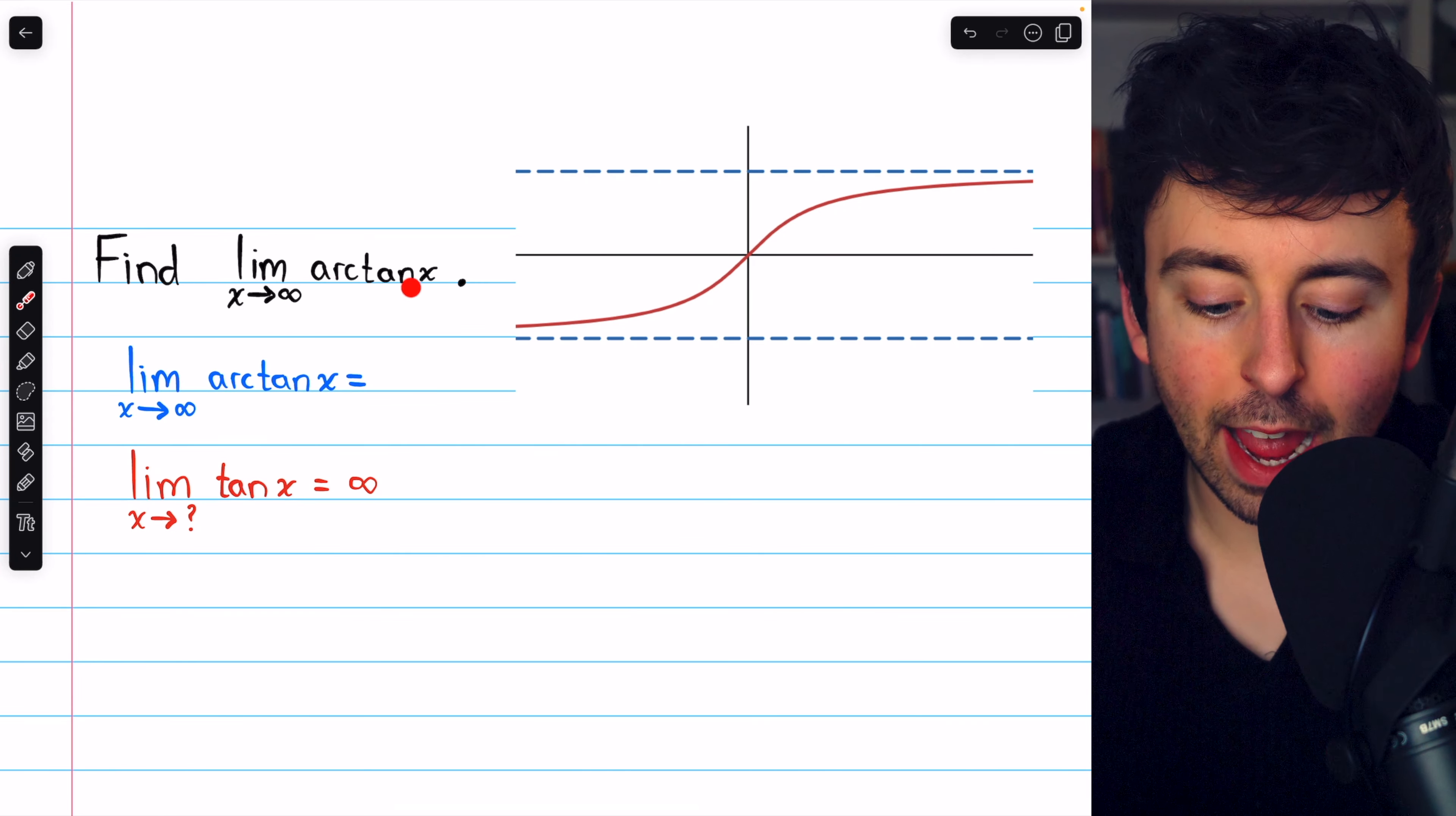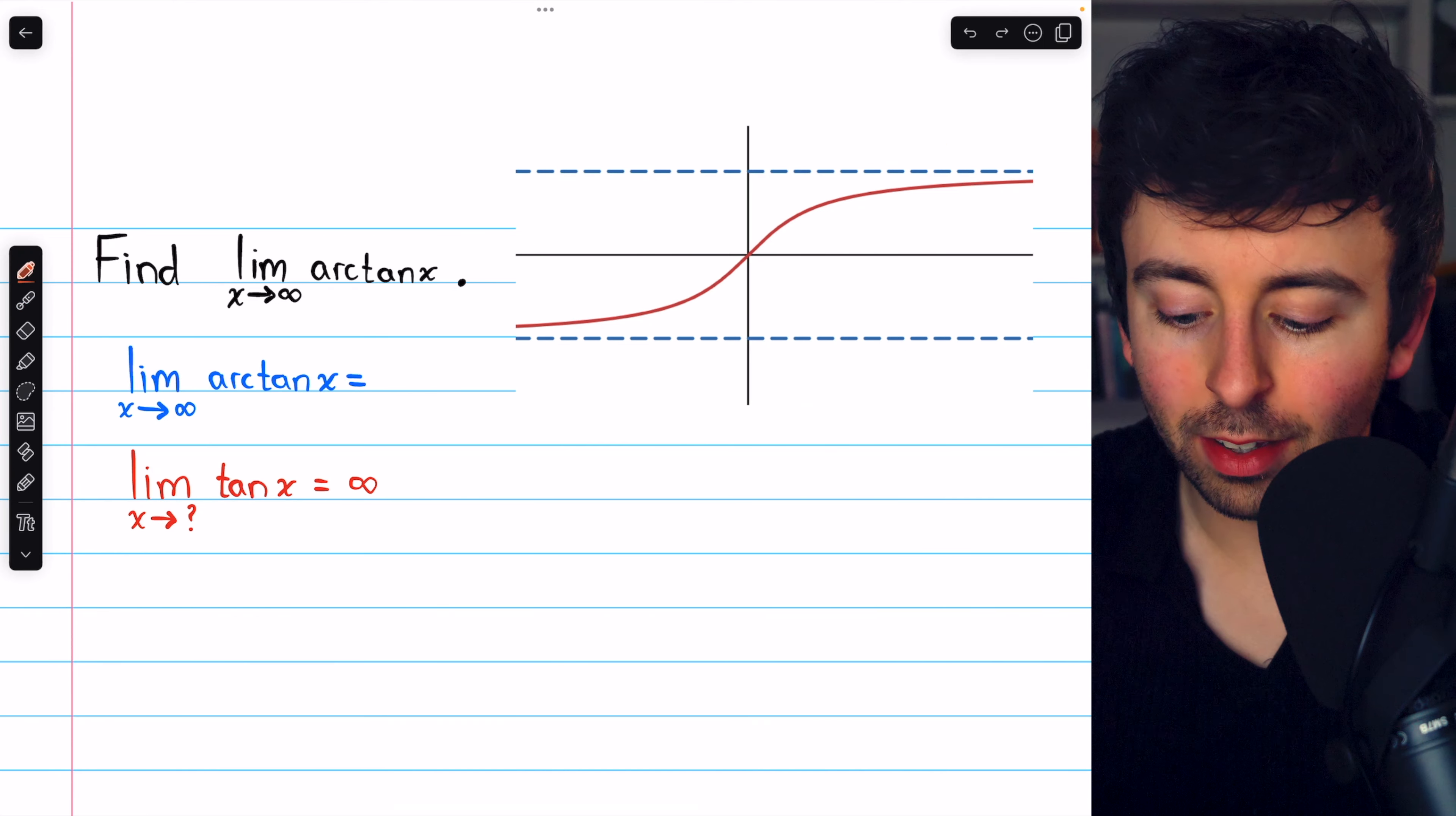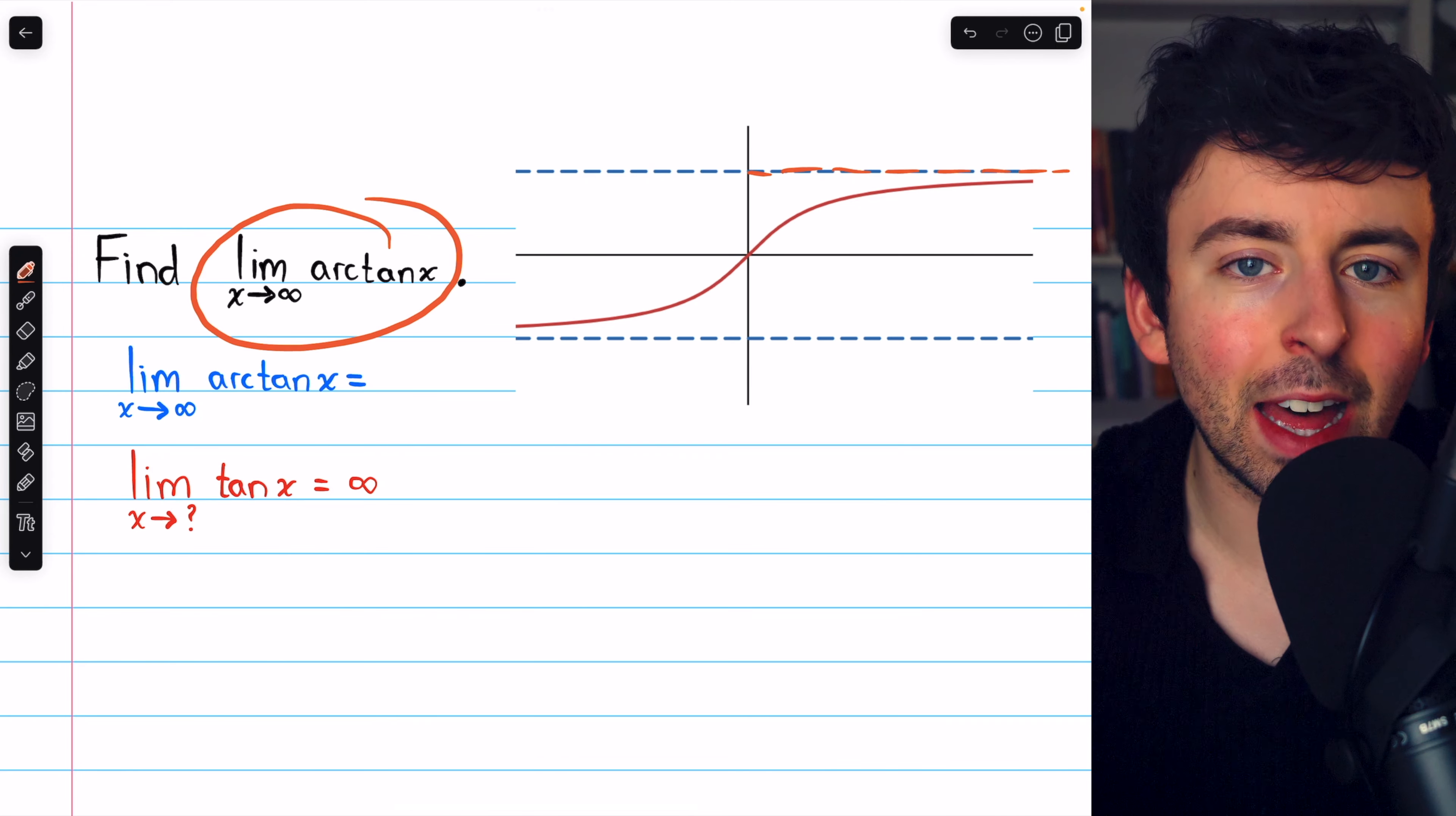What is the limit of arctan of x as x approaches infinity? Perhaps you know that the arctan function looks like this. So we can clearly see there is a horizontal asymptote as x goes to infinity, and this limit does have a value. But what is that value?